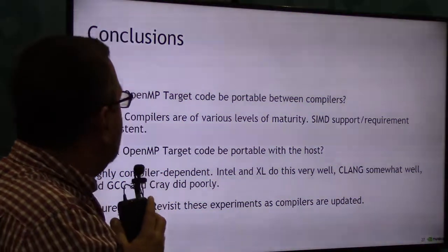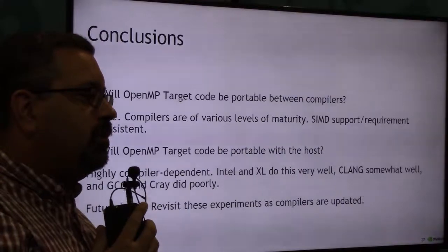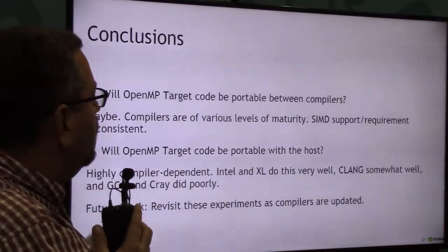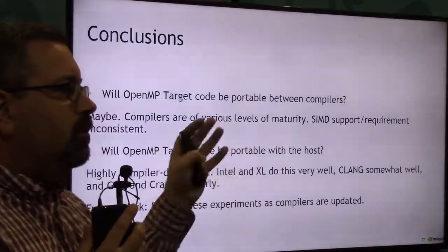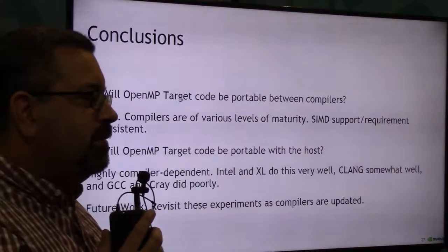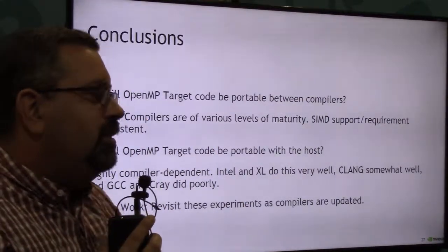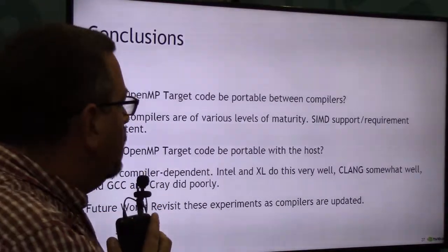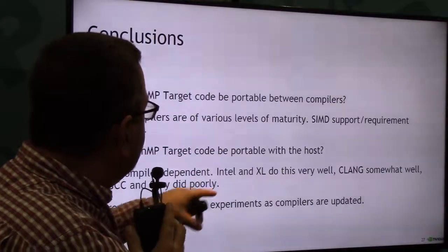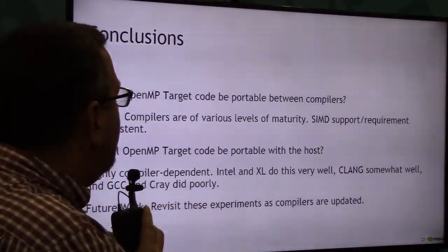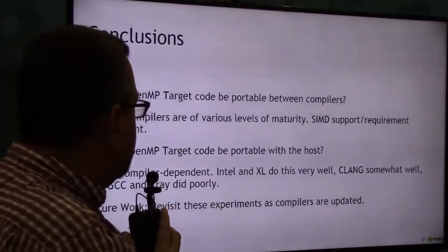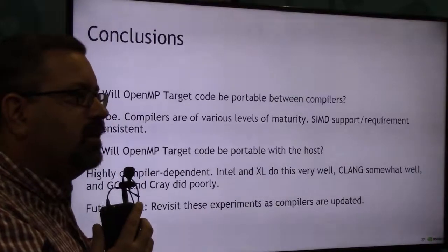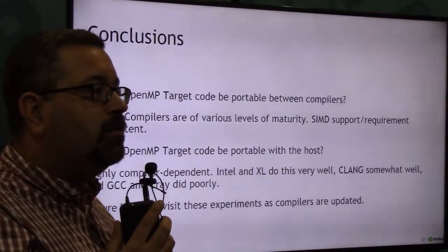So what are my takeaways? I asked two questions at the beginning: Will my target code be portable between compilers? For the most part it did fairly well — the aggressively collapsed code did particularly well. But depending on the maturity of the compiler, you may get different results. The requirement of writing OMP SIMD is a little bit inconsistent: some compilers demand it, some don't want it, and hopefully that'll get cleared up. Can the target code be portable to the host? This is really compiler dependent. Intel, XL, and PGI all do quite well. Clang hits about 80%, and for a lot of users that's close enough. GCC and Cray did poorly. For future work, I'd really want to revisit this as the compilers become more mature, and I expect a lot of these results will change. Thank you for coming out.